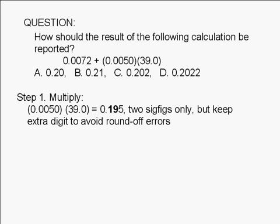In the case shown here, when we multiply 0.0050 by 39.0, we get an intermediate result of 0.195, which should be rounded off to two significant digits.